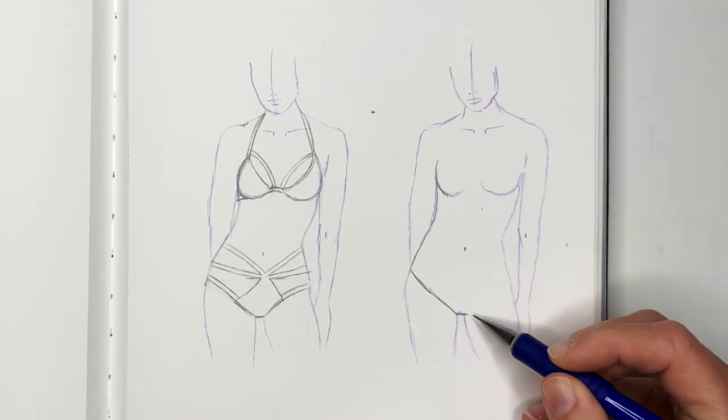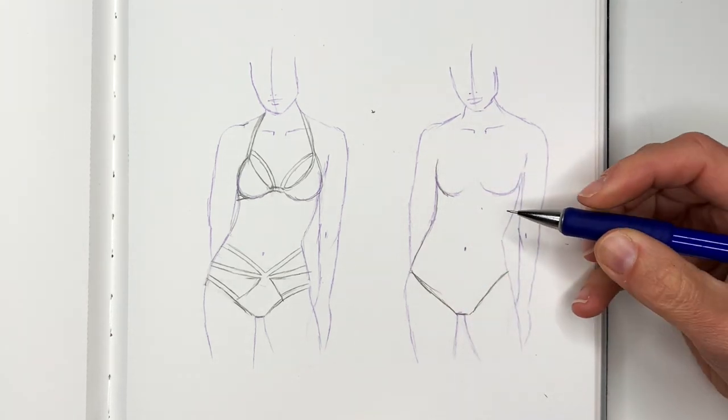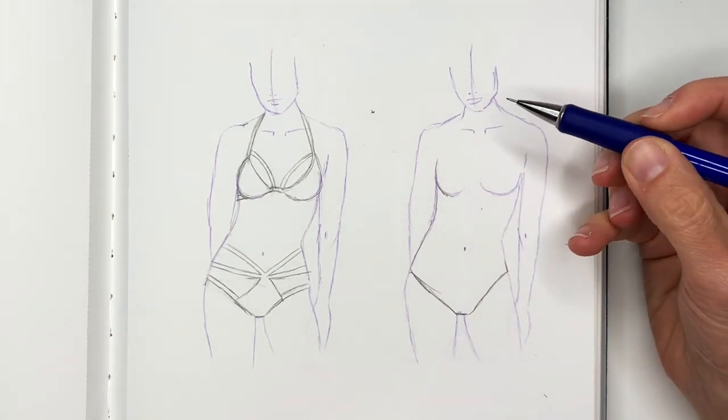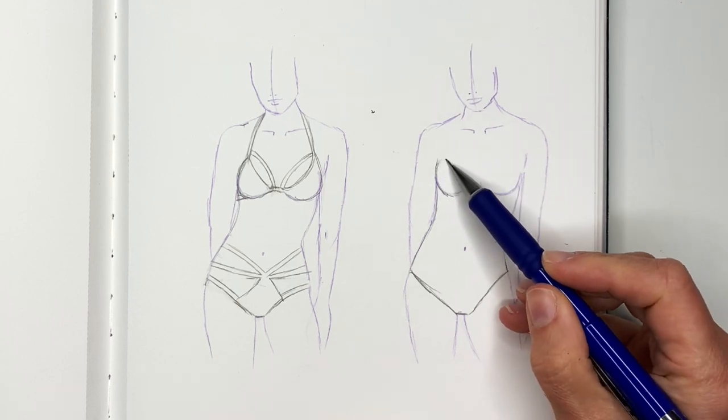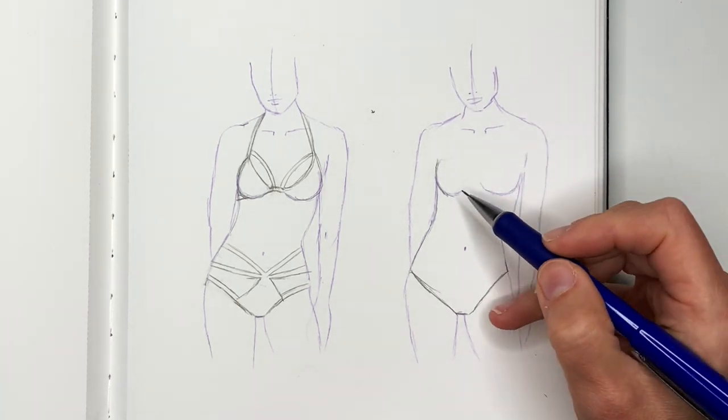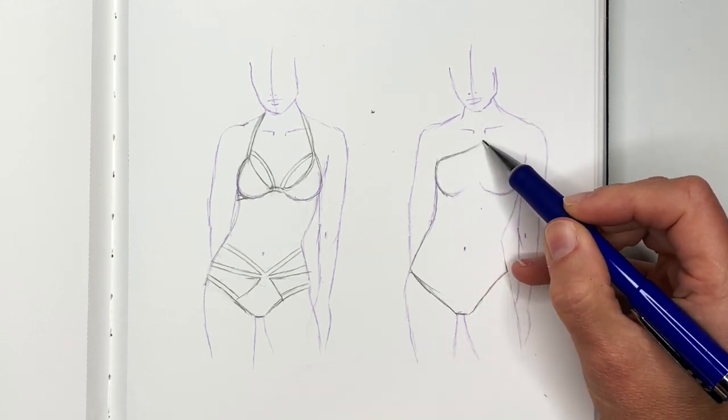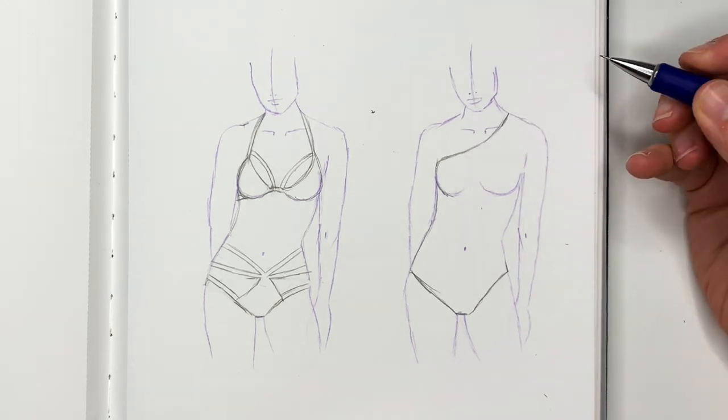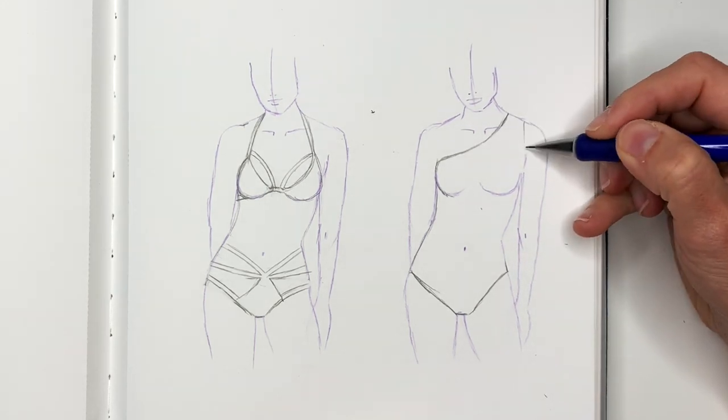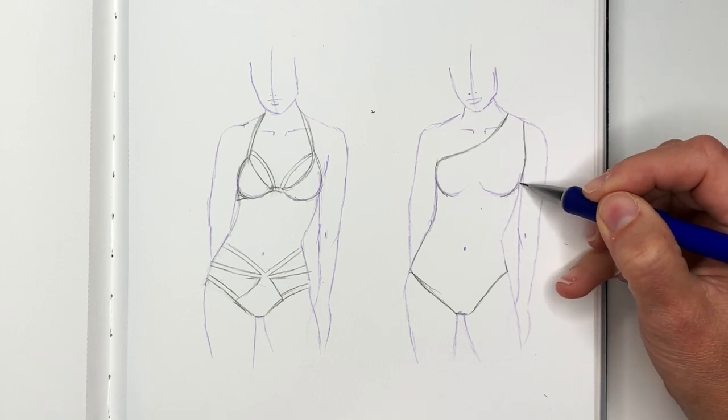And show the crotch area and go to the other side. Now for the top, we just need to make one strap go across. Again, this could be really low or could go higher like mine is.